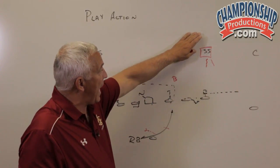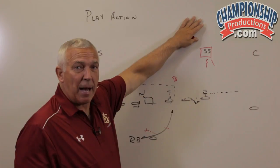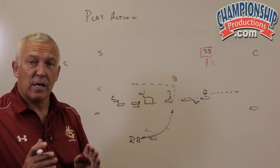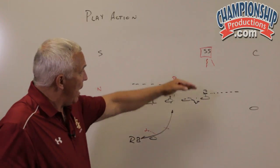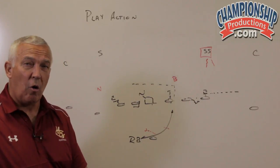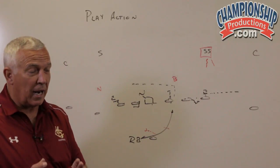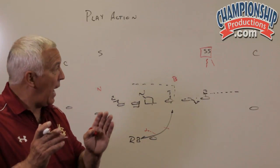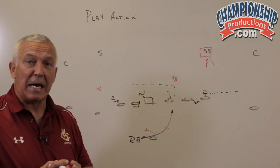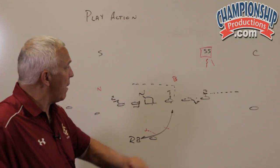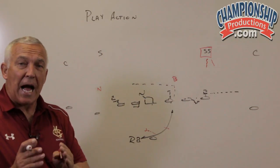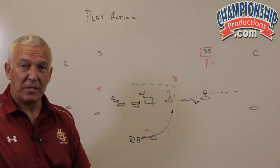The safeties will tell the quarterback right out of the gate. If they're getting depth, there's no home run — come back to the intermediate and the check down. If they're coming down, we want the home run. If I don't have the home run, come back to the intermediate route, because we've basically eliminated the deep cover guy with the play action.